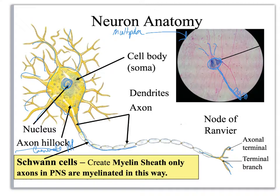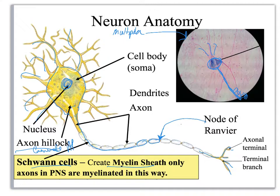You'll notice that the axon looks kind of like a string of pearls, and I've got all these white beads — those are Schwann cells. In between each Schwann cell is a node of Ranvier. Now the Schwann cells in the peripheral nervous system create the myelin sheath. In the central nervous system, we use oligodendrocytes instead.